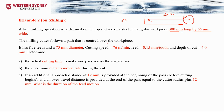The milling cutter will follow a path centered above the workpiece. It has five teeth, a 75 mm diameter, cutting speed of 76 m/min, feed rate per tooth of 0.15 mm/tooth, and a depth of cut of 4 mm. We need to find: the cutting time for one pass, the maximum metal removal rate, and given an additional approach distance of 12 mm at the beginning and an overtravel of cutter radius plus 12 mm at the end, the feed motion duration.